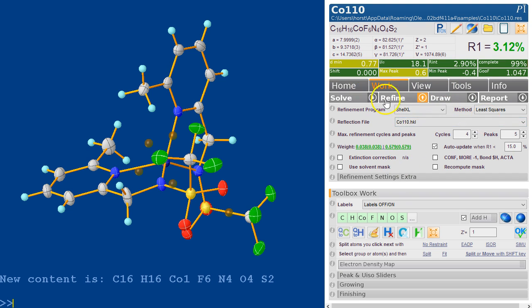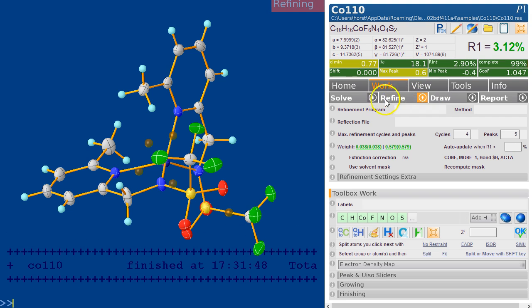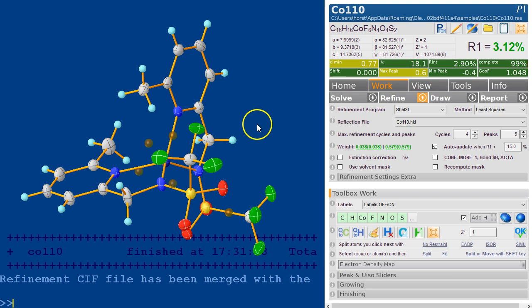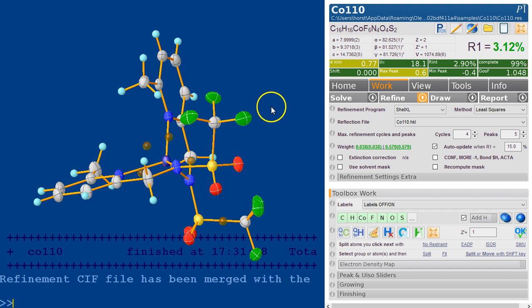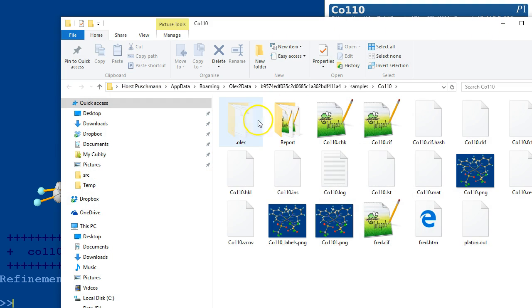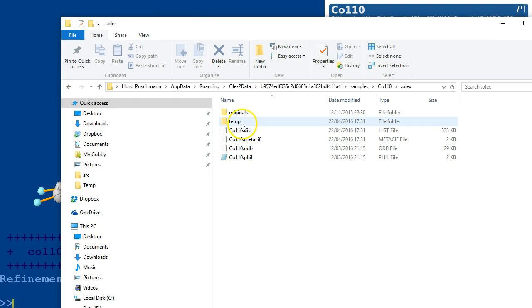When you press refine, Olex 2 generates an INS file from its own structure model. That INS file is copied to a refinement location which you can explore here. It's the hidden folder dot Olex.